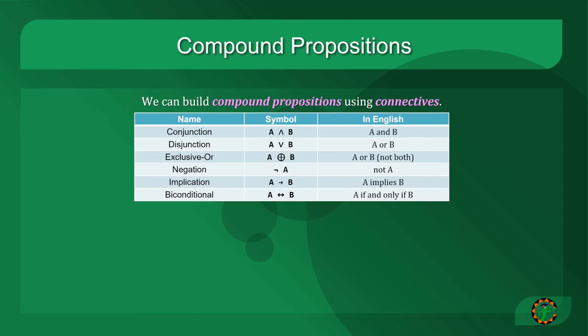Negation reverses the value of a proposition, so we read it as NOT A. Implication uses a one-way arrow and is read A implies B.